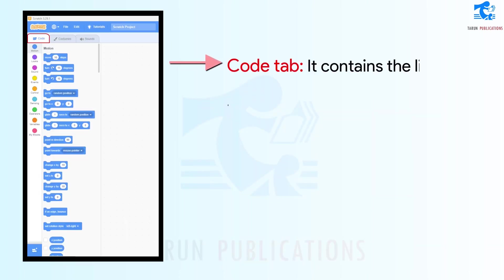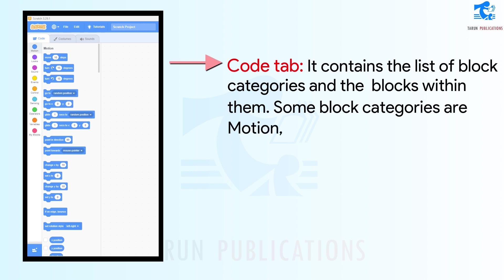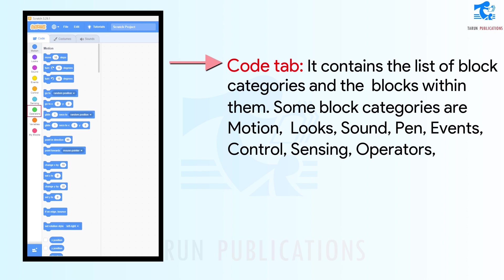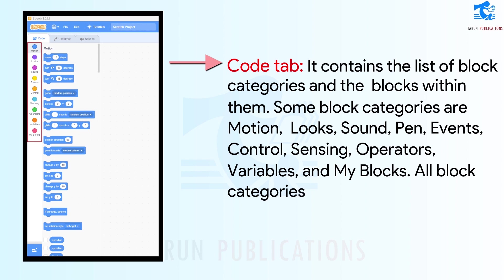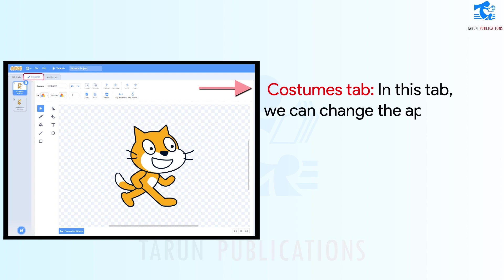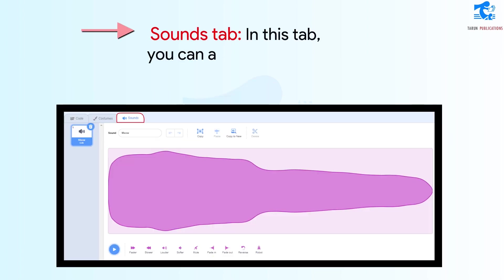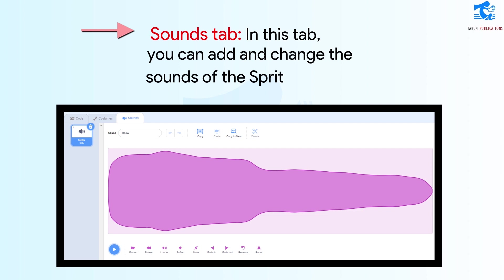Code tab: It contains the list of block categories and the blocks within them. Some block categories are Motion, Looks, Sound, Pen, Events, Control, Sensing, Operators, Variables, and My Blocks. All block categories are of different colors. Costumes tab: In this tab, we can change the appearance of the Sprites and Backdrops. Sounds tab: In this tab, you can add and change the sounds of the Sprite.